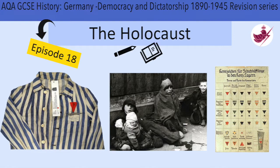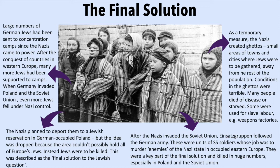Large numbers of German Jews had been sent to concentration camps since the Nazis came to power. After the conquest of countries in western Europe, many more Jews had been transported to camps. When Germany invaded Poland and the Soviet Union, even more Jews fell under Nazi control. The Nazis planned to deport them to a Jewish reservation in German-occupied Poland, but the idea was dropped because the area couldn't possibly hold all of Europe's Jews.